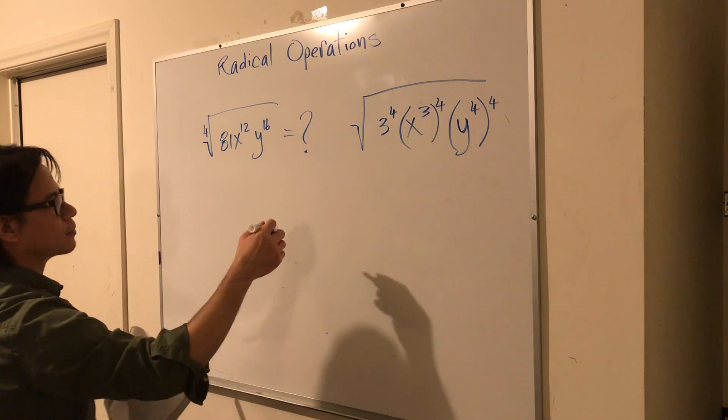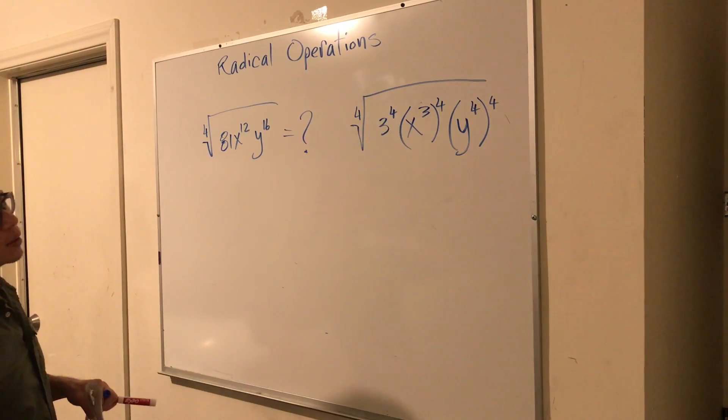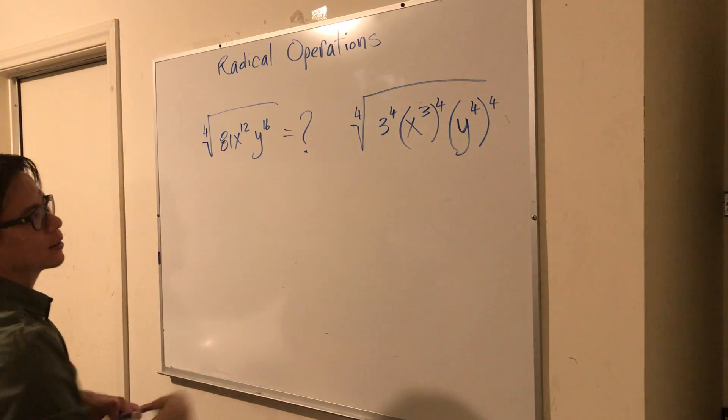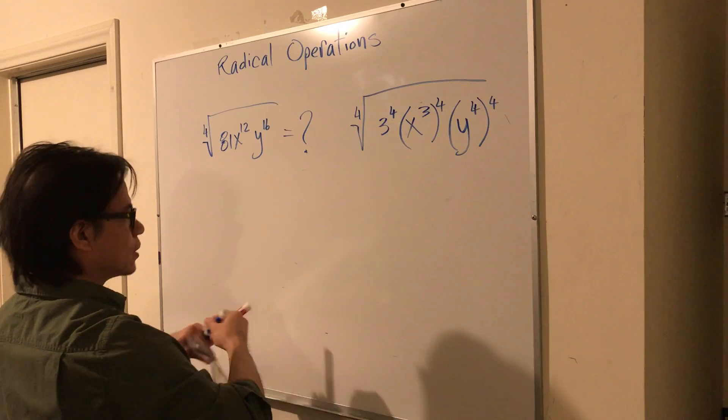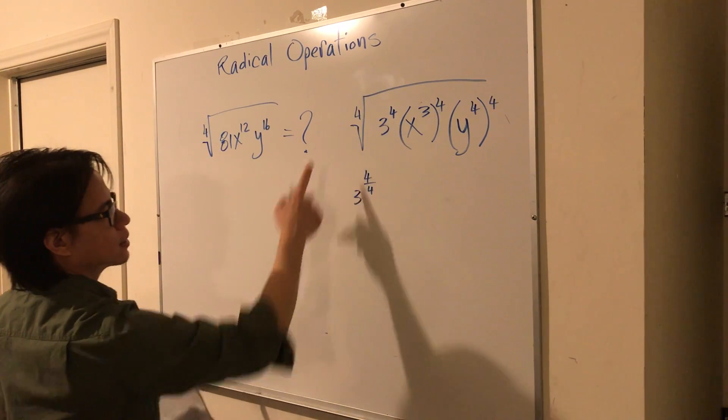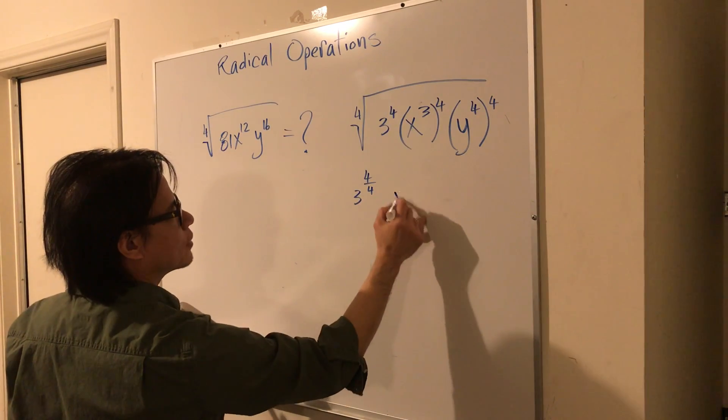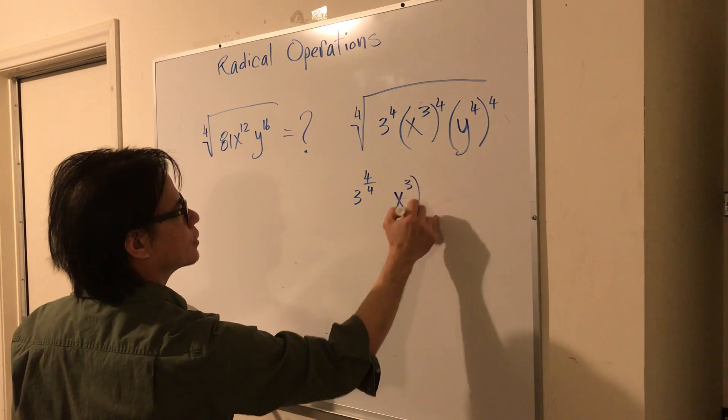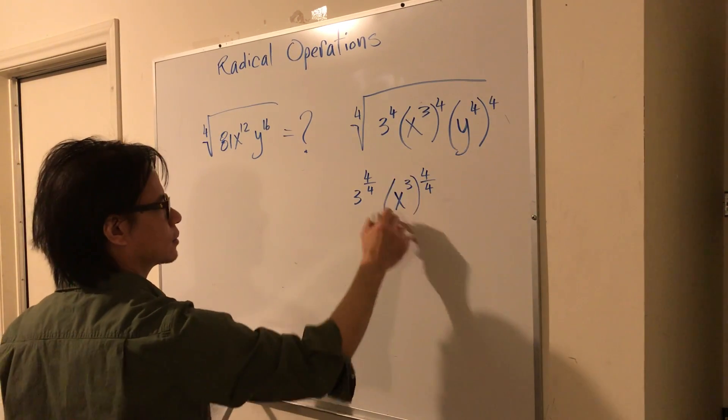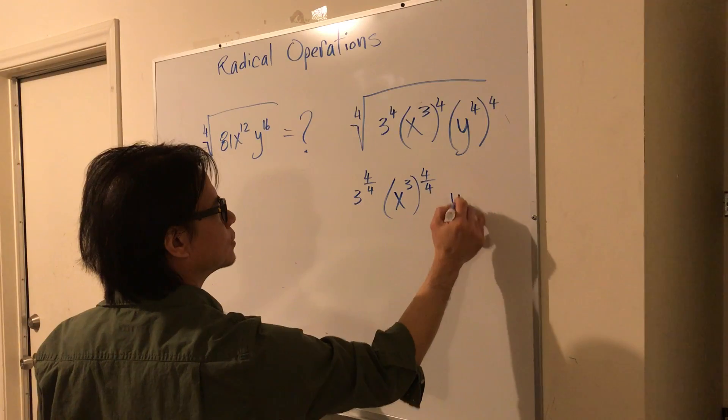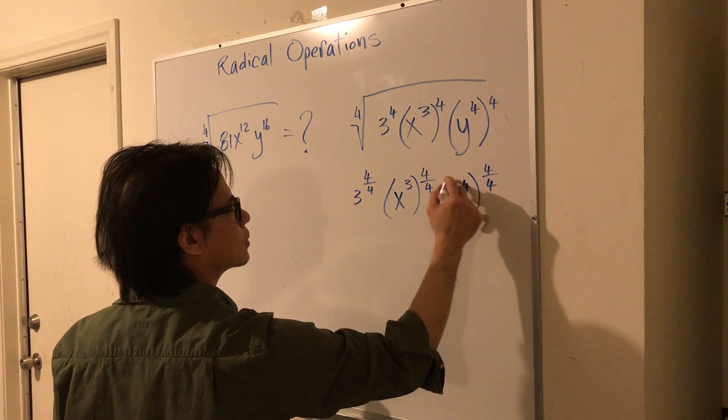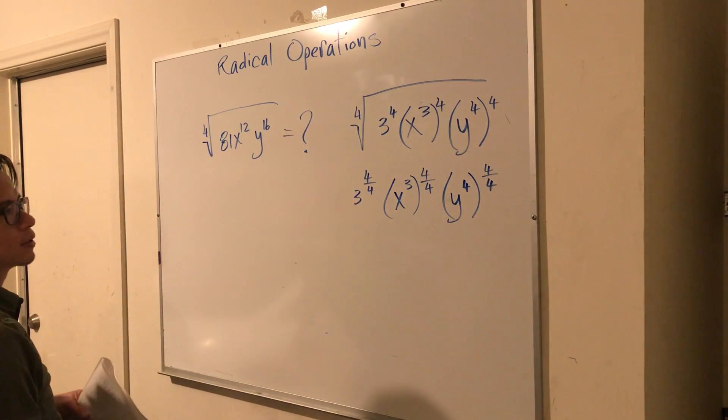Now, we have a 4 out here. If you have a 4, 3 to the 4th power times 4. We'll just leave it at that for now. And then here you have x to the 3rd power times 4 over 4, and then you have y to the 4th power times 4 over 4.